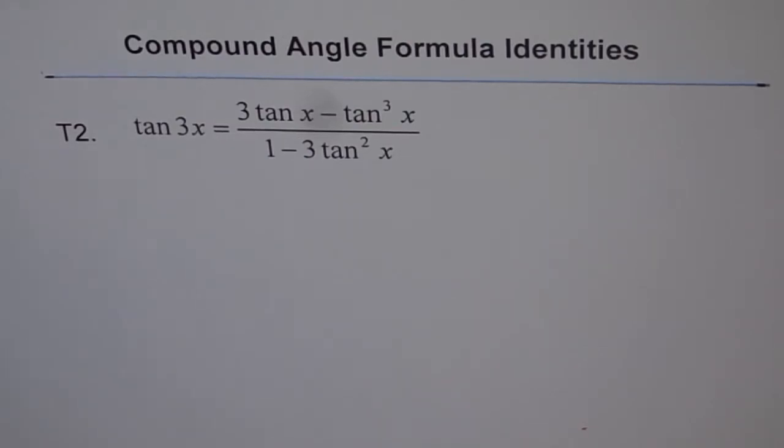Compound angle formula identities, T2. Here we'll try to derive what tan 3x equals to. We already have sin 3x and cos 3x. Now let's find out what tan 3x is. We'll use the compound angle formula and figure it out.